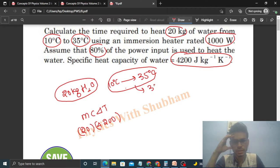So change in temperature, that is 35 minus 10, that is 25 degree Celsius, right? So delta t will be 25.